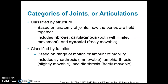Now we're going to move on and talk about joints — this should be our last topic. Joints can be classified by structure: fibrous, cartilaginous, and synovial. Fibrous and cartilaginous have limited movement. Synovial joints are freely movable — these are the joints we typically think of, like your knee, elbow, shoulder, and hip joints.